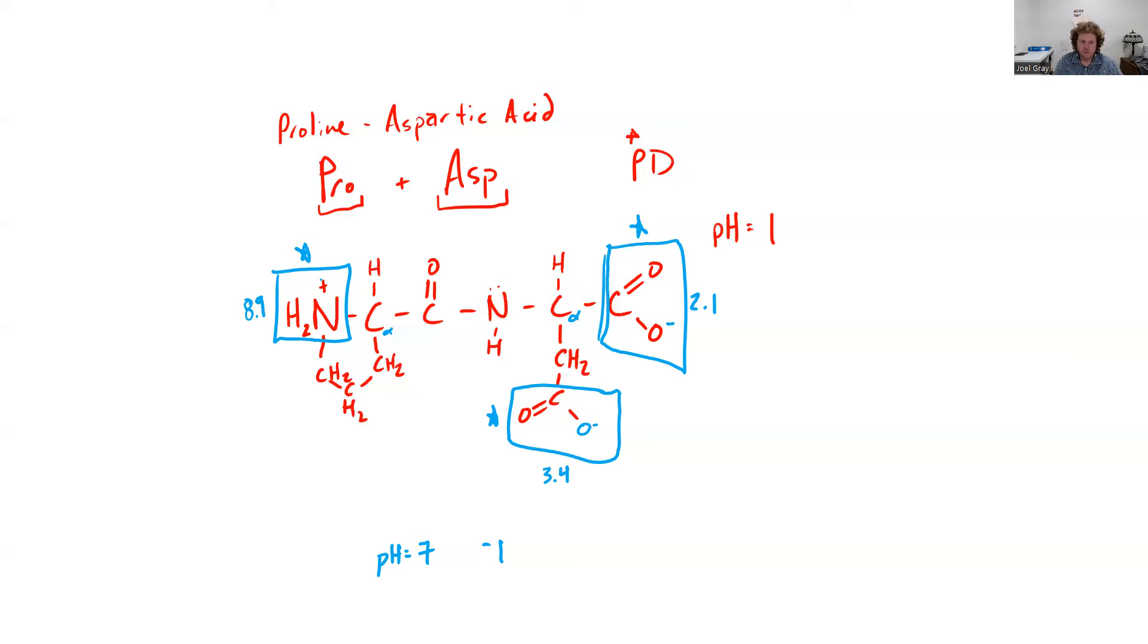My proline, that R-group goes back to my N-terminal of my peptide. The remainder of that R-group doesn't have a charge. There's nothing else on this molecule that has a charge. I hope this was helpful as you look into drawing a dipeptide. Have a good one.